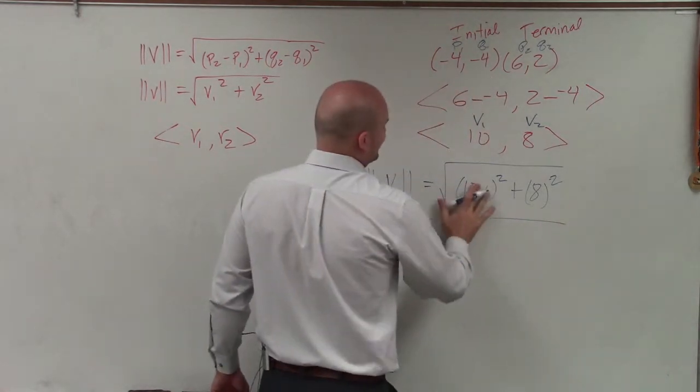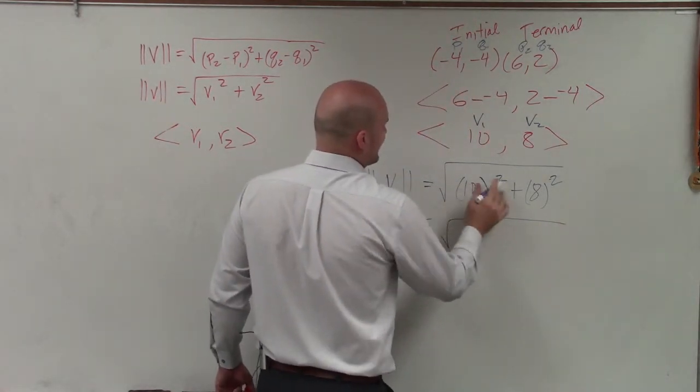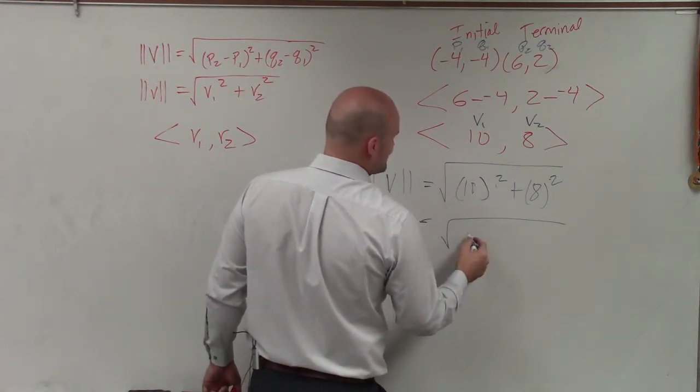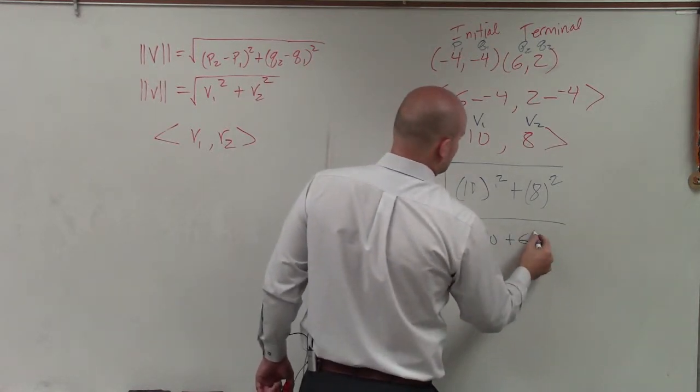So 10 squared is 100 plus 8 squared is going to be 64.